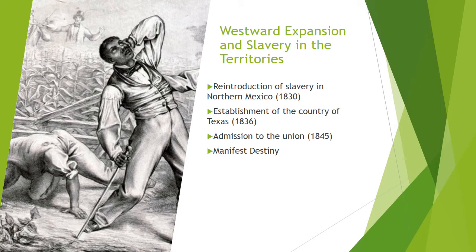By the time the Oregon Territory was admitted to the Union as a free state in 1848 and the United States had gone to war with Mexico, Americans had begun to embrace the idea that America had a manifest destiny to settle the West — that God or Providence had marked them out for the special dispensation to have the entire continent in order to bring to it the best possible political and religious system. The nation was closely watching and keeping careful tally of the number of free and slave states admitted, because they didn't want one section to dominate over another in Congress.